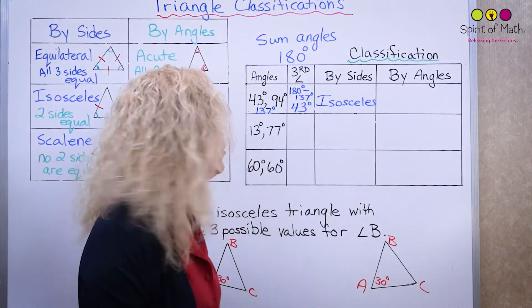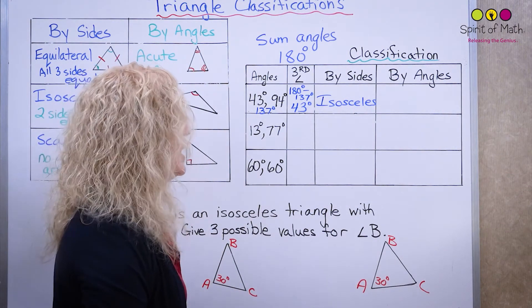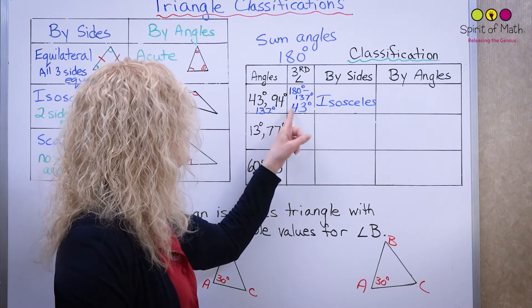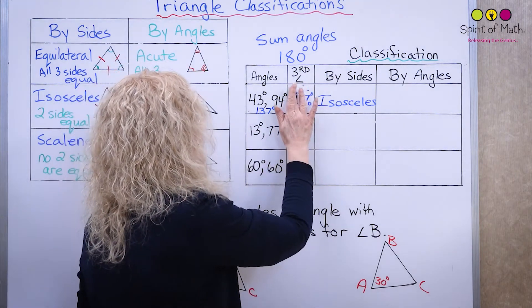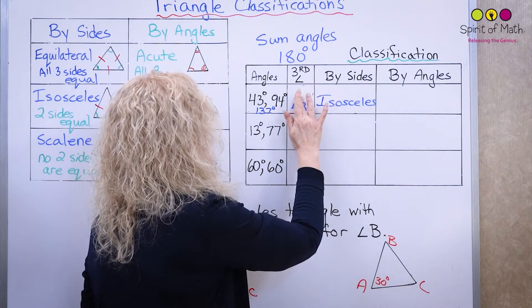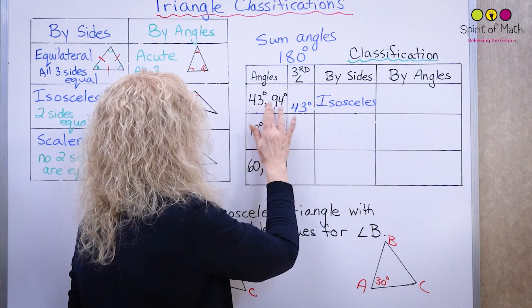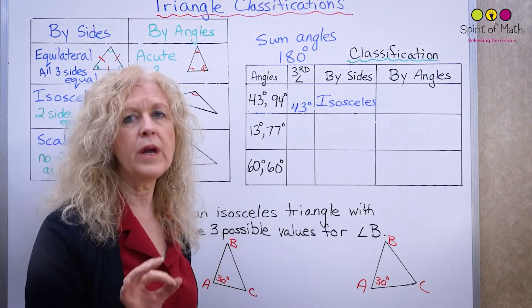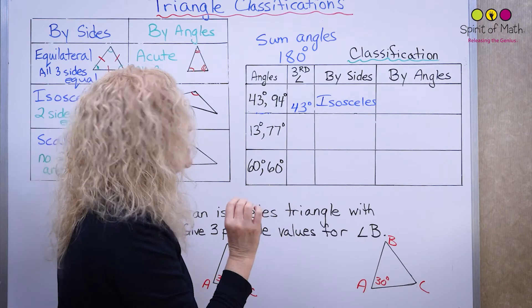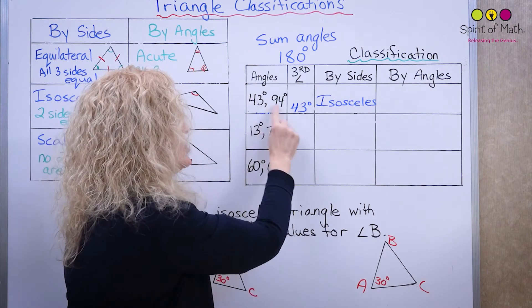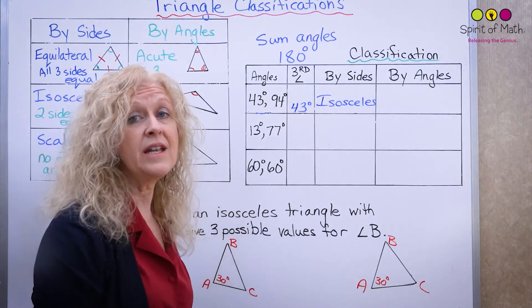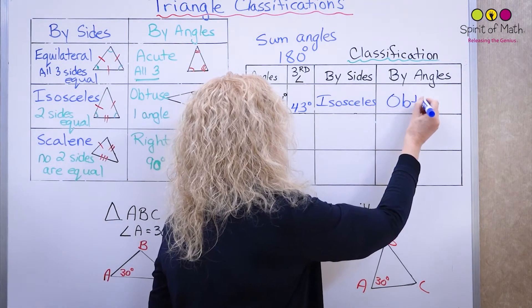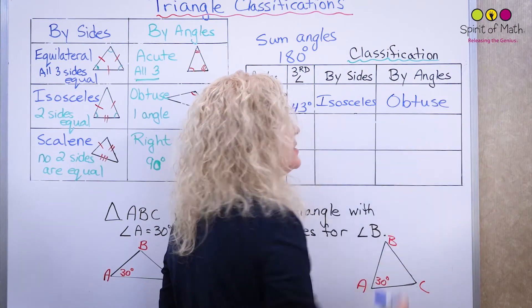It's an isosceles triangle. By angles: is it a right triangle? No, there are no right angles. Is it obtuse? Yes — 94 degrees is obtuse. So we have an obtuse isosceles triangle.